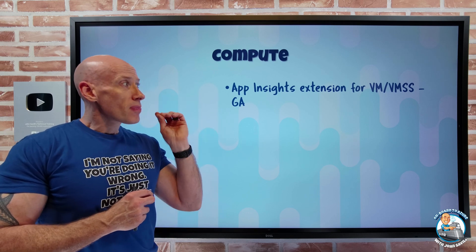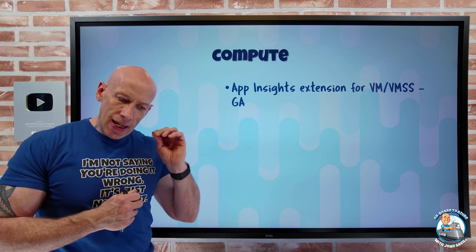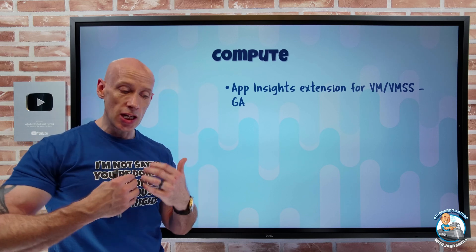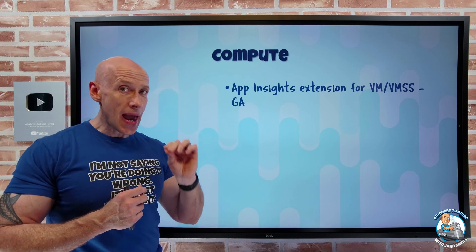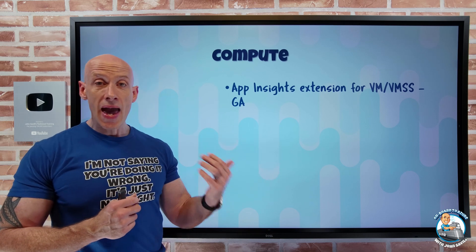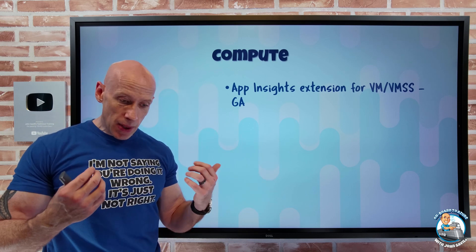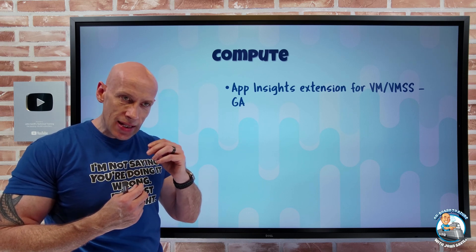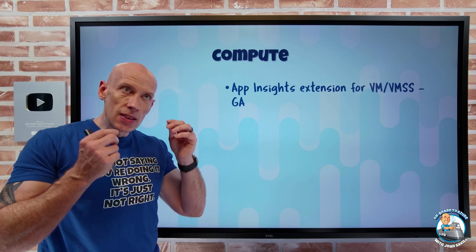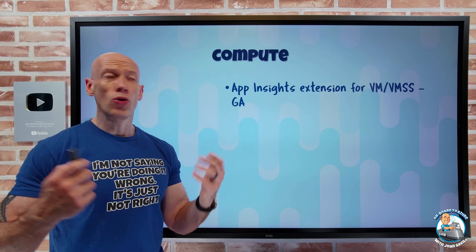Well, now there's an extension for VMs and virtual machine scale sets. With that auto-instrumentation — an agent — without having to change my code, it's going to hook into .NET. This could be .NET Framework or .NET Core applications built on IIS. It will then bring that information into my App Insights workspace, so I can get those detailed application-level logs, metrics, and traces to give me insight into my custom application. I can enable this through the portal or through a PowerShell script.